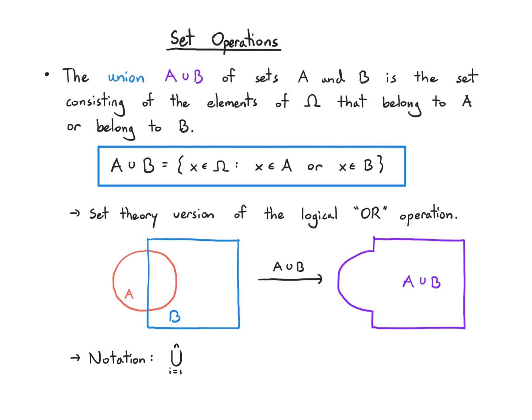Sometimes we want the union of more than two sets — n sets. We use the notation with the big U with subscript i equals 1 going up to n. That means take the union of A1 all the way up to An, and in set builder notation those are just the elements that belong to A1 or A2 or all the way up to An.